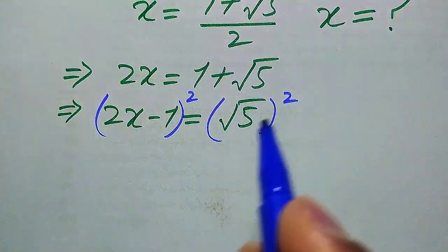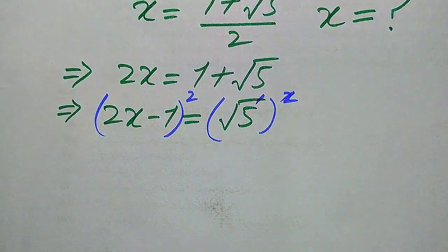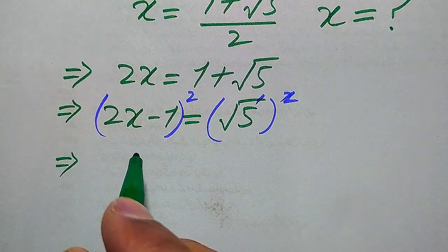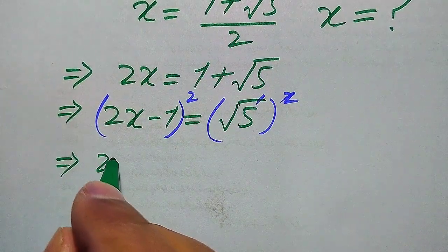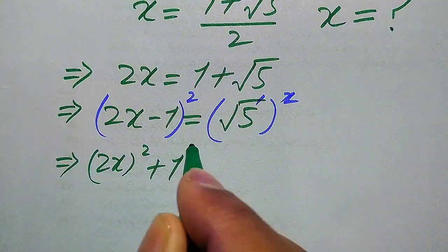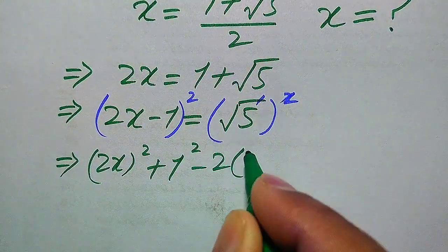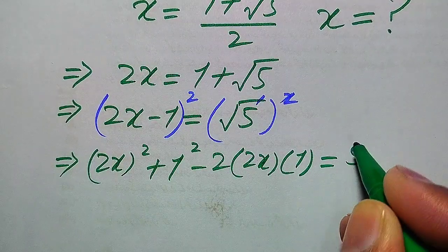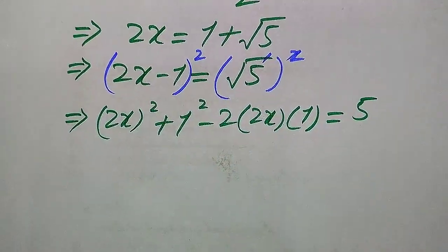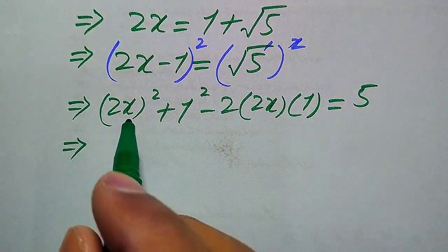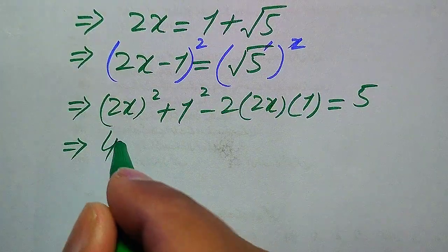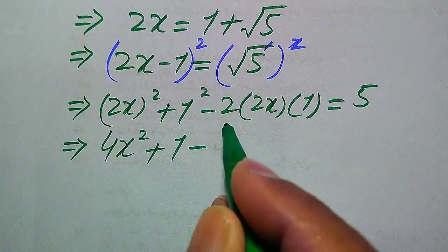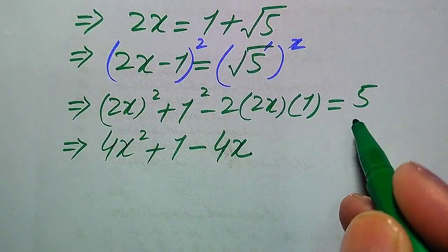When we apply squaring, the square root cancels out. On the left-hand side we apply the algebraic formula (a minus b)² = a² - 2ab + b², giving (2x)² minus 2 times 2x times 1 plus 1² equals 5. This expands to 4x² minus 4x plus 1 equals 5.